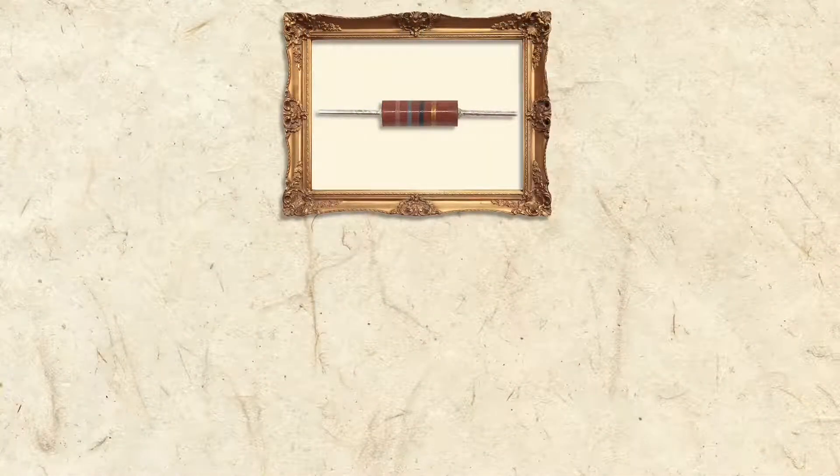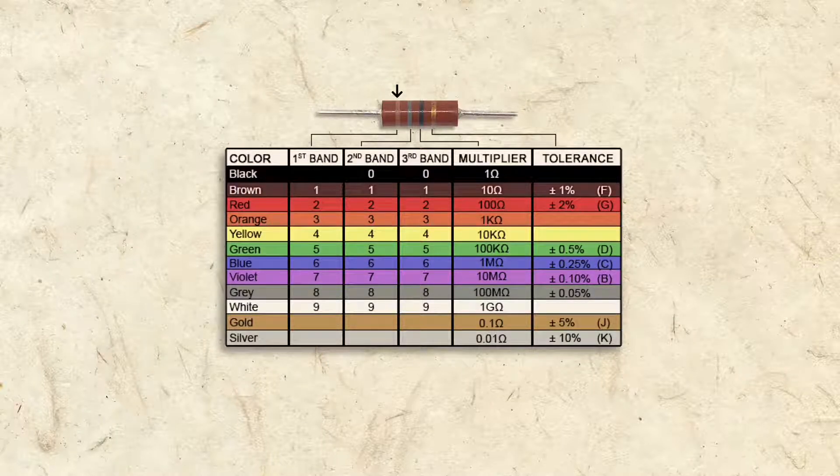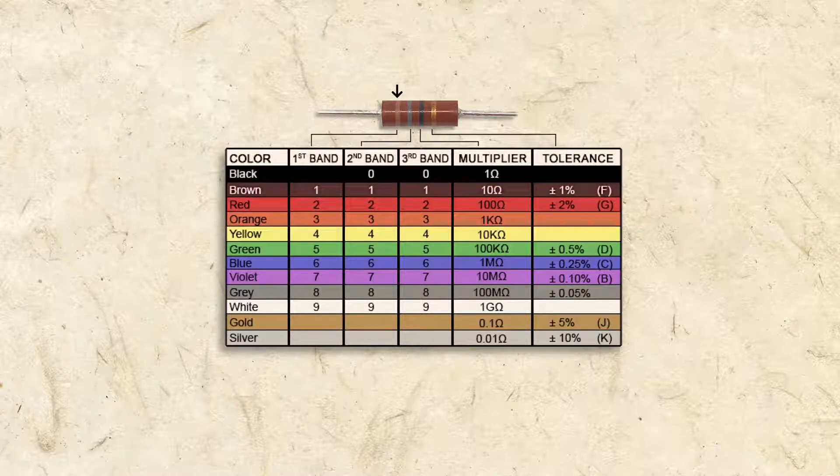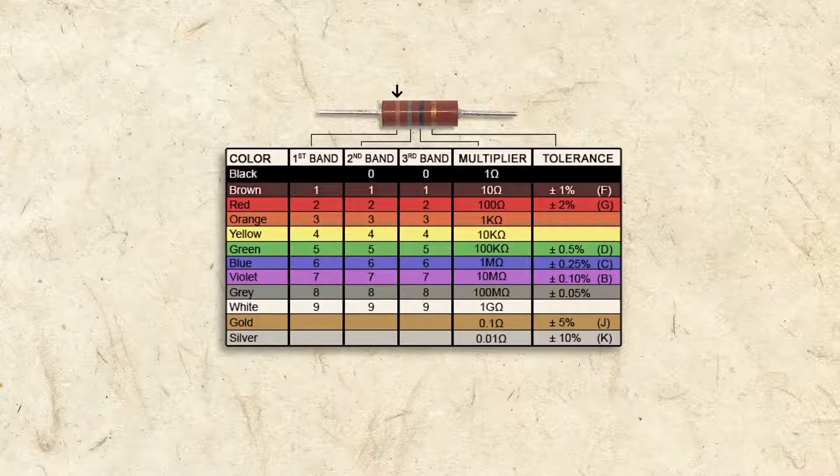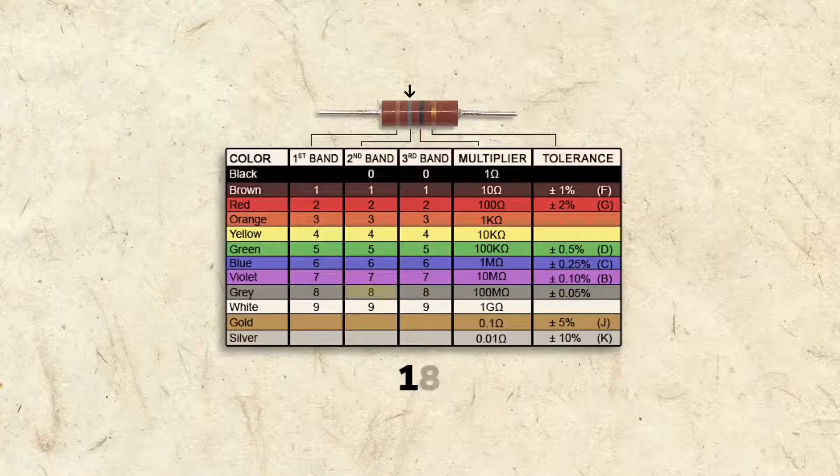The colorful bands on a resistor aren't for decoration, they're for identification. The first band on this 18 ohm resistor is brown. According to the chart, that represents a 1. The second band is gray, which represents an 8.